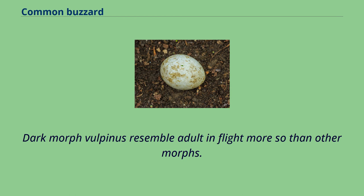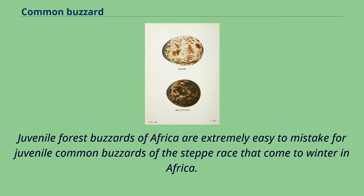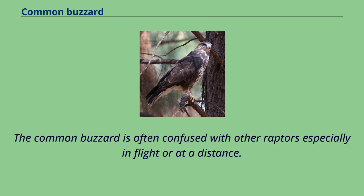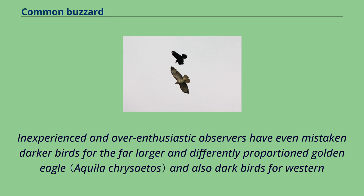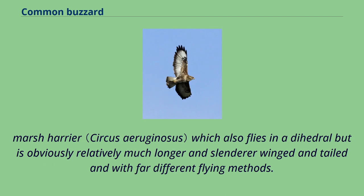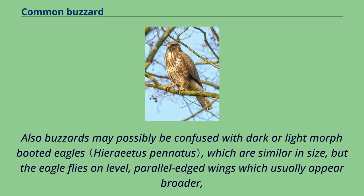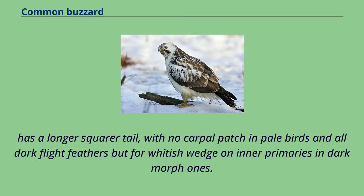Juvenile forest buzzards of Africa are extremely easy to mistake for juvenile common buzzards of the steppe race that come to winter in Africa. The common buzzard is often confused with other raptors, especially in flight or at a distance. Inexperienced observers have even mistaken darker birds for the far larger golden eagle, and dark birds for the western marsh harrier, which also flies in a dihedral but is obviously relatively much longer-winged and tailed with far different flying methods. Buzzards may also be confused with dark or light morph booted eagles, which are similar in size, but the eagle flies on level, parallel-edged wings which usually appear broader, has a longer square tail, with no carpal patch.